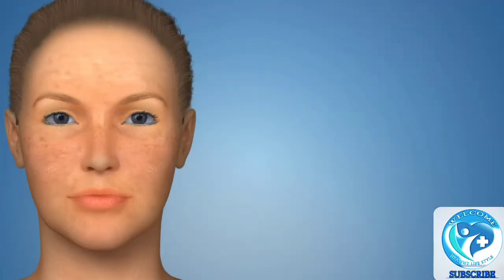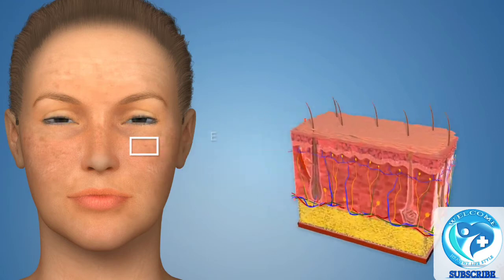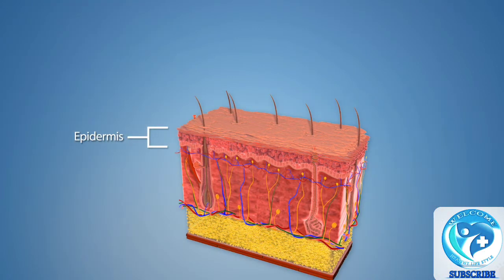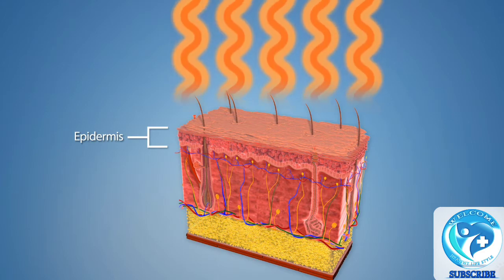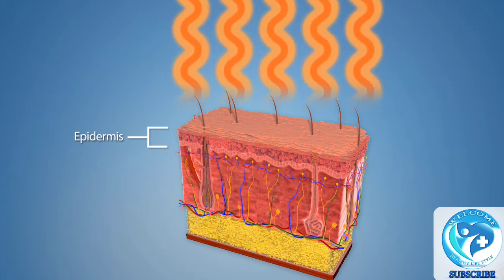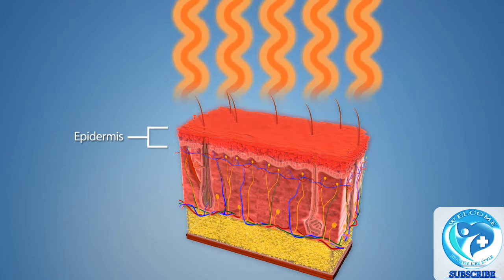The skin is composed of three layers, known as the epidermis, dermis, and hypodermis. The epidermis, or outer layer of the skin, acts as the skin's primary defense against the environment. As a result, these layers sustain the most damage.